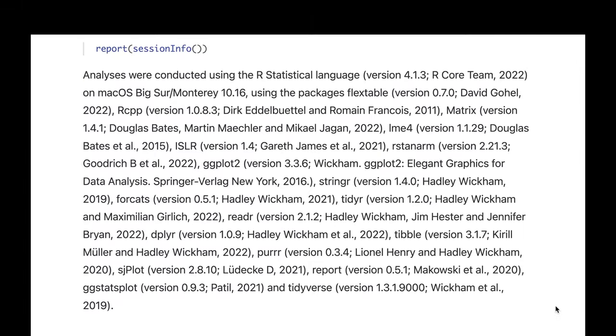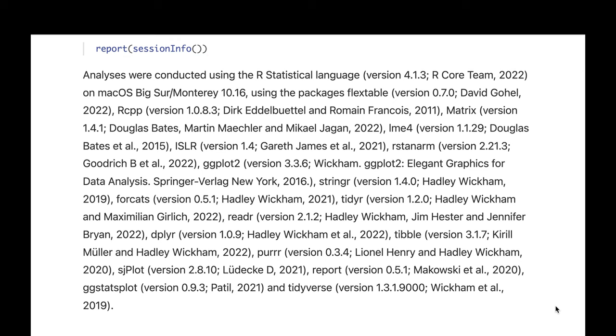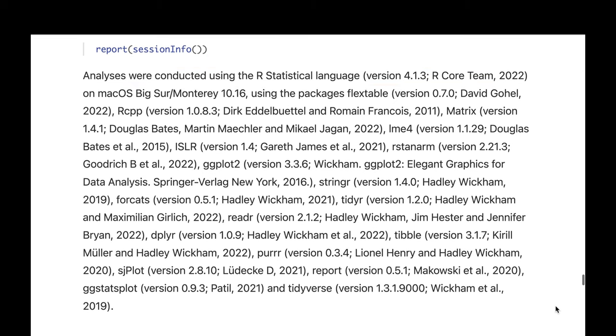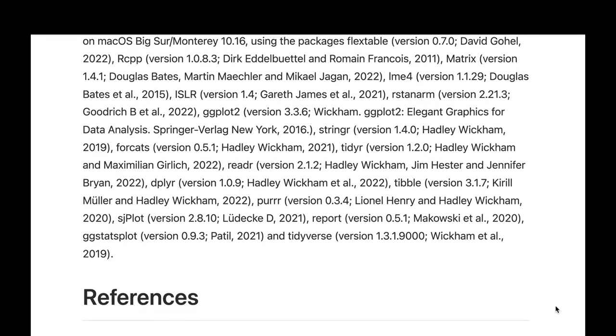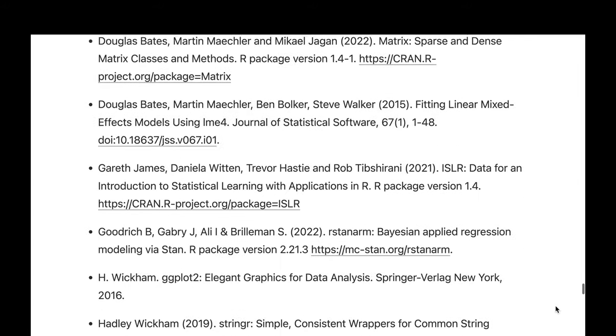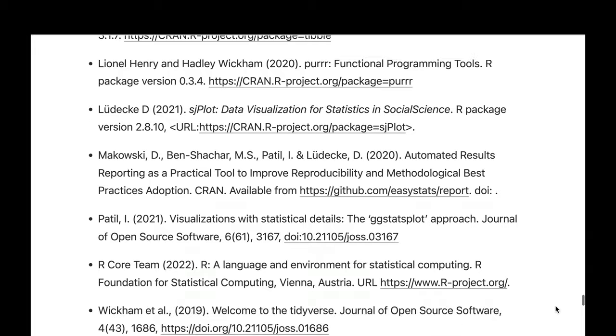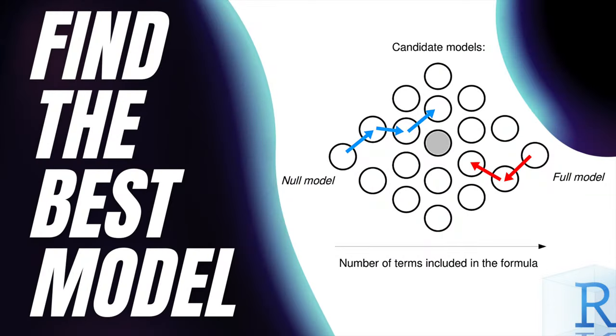And finally, using only one command, report session info, you first report the statistical software you used for data analysis. Secondly, you list all packages you used. And lastly, you cite all packages you used automatically without any typing mistakes. How cool is that? And if you want to know how to find the best model which you then can report, check out glmulti package.